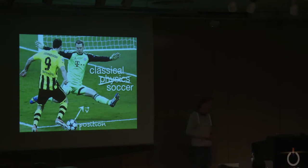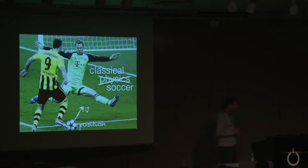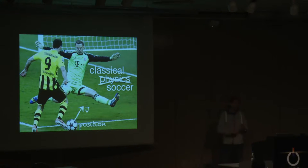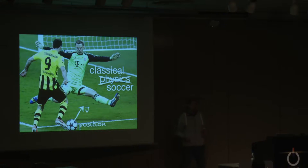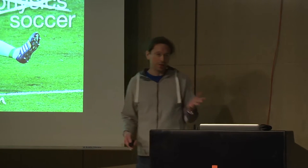I love Manuel Neuer dearly — he made us world champion — but I also envy him a bit, because the game he's playing is fairly simple, while I'm dealing with quantum mechanics, which is not simple at all. And this guy is earning much more money than me. Anyway, let's take a look at classical soccer. Manuel Neuer needs two pieces of information to play this easy game: where is the ball — the position — and where is it going — the velocity, meaning speed and direction. Two pieces of information. Very easy game.